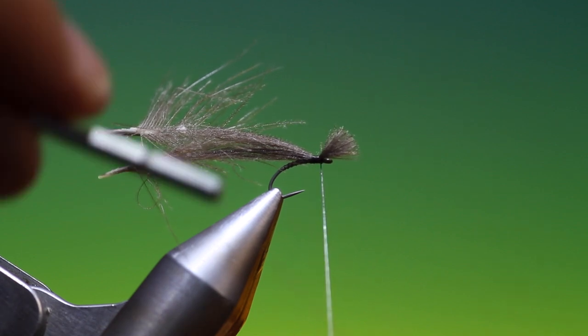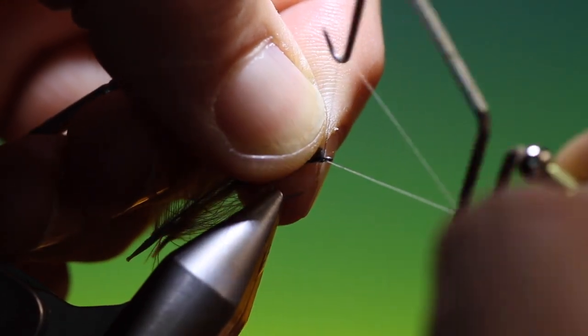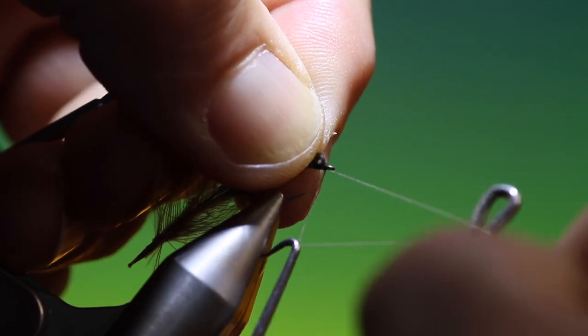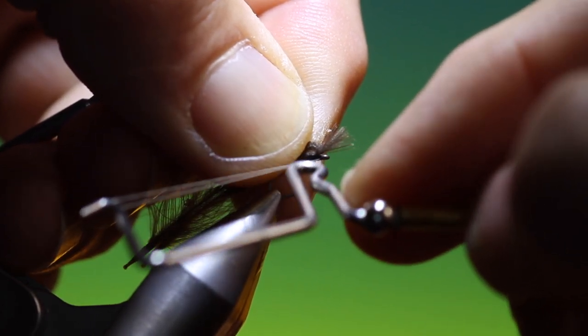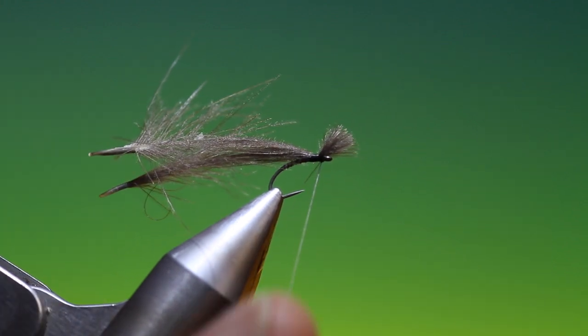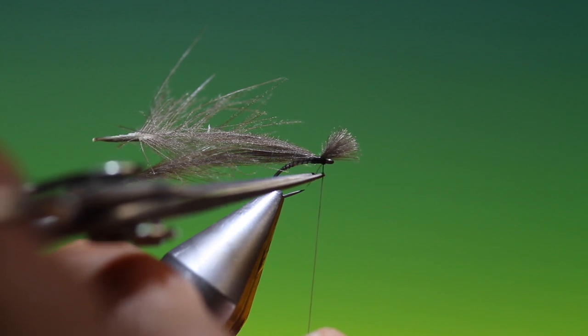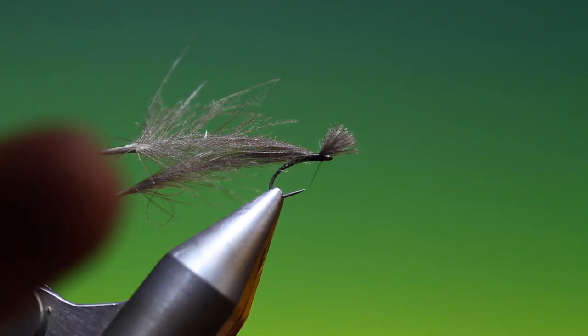Then we can take our whip finisher and just tighten it to there. Remove the tying thread.